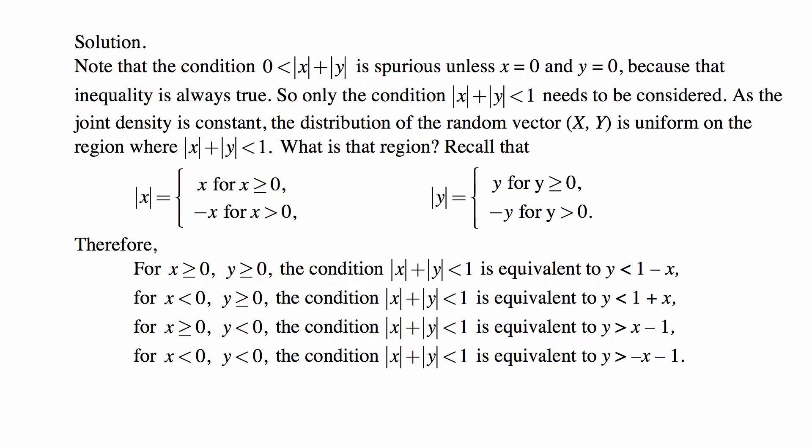One thing we note immediately is that the joint density is constant, so the distribution of the random vector (X, Y) is uniform on the region where the absolute value of X plus the absolute value of Y is less than one. The key question is: what is that region?